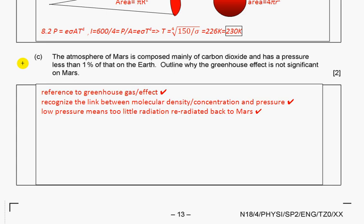The atmosphere of Mars is composed mainly of carbon dioxide and has a pressure less than one percent of that on Earth. Outline why the greenhouse effect is not significant. The greenhouse effect is associated with carbon dioxide. Because the amount of molecules and pressure on Mars of carbon dioxide is less than on Earth, we have very little effect of greenhouse effect and very little is re-radiated back to Mars.